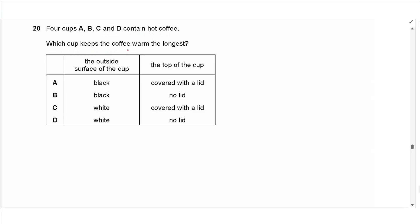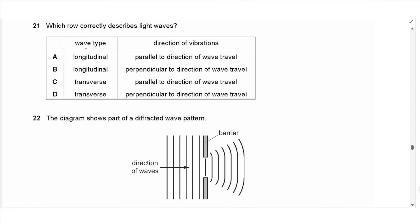Question 20 says: four cups A, B, C, and D contain hot coffee. Which cup keeps the coffee warm the longest? That means it is the worst emitter of infrared radiation. The outside surface of the cup is white, so it does not emit enough energy. The top of the cup is covered with a lid to reduce convection or evaporation. So the answer is C.